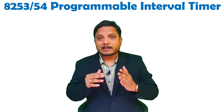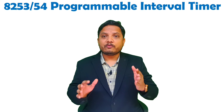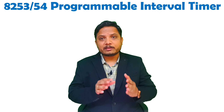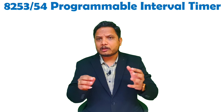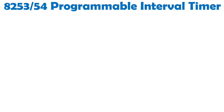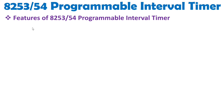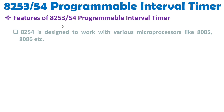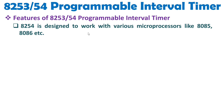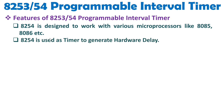We will discuss how to use this IC as a timer as well as a counter, and what features are there with this IC. First, I'll explain the features of the 8253 and 8254 IC. You should know it is designed to work with various microprocessors like 8085 and 8086. The basic agenda is to generate hardware delay using this IC.